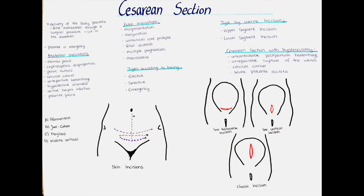A selective cesarean section is done after the onset of labor, when during labor a new circumstance arises where a cesarean section is more favorable than a vaginal delivery. Another type is the emergency cesarean, which is done when there is an immediate threat to either the life of the mother or baby — for example in cases of umbilical cord prolapse, fetal distress, pre-eclampsia, or severe hemorrhage.